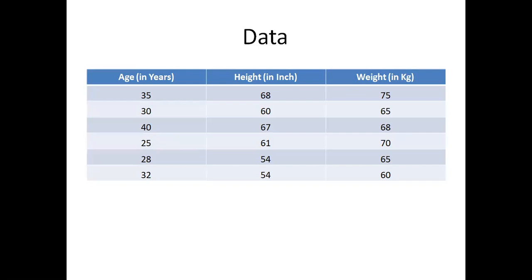Let us take this data. I have taken very simplified data — age in years, height in inches, and corresponding weight in kg. Age and height are the independent variables, and weight is the dependent variable, often called the target column. If you look at the weight column, the values are 75, 65, 68, 70, 65, 60. The lower limit is 60 and the upper limit is 75. It is a continuous scale, not a discrete scale, so this data is a regression problem. In this class, I am mainly discussing how to use the gradient boosting method for regression.